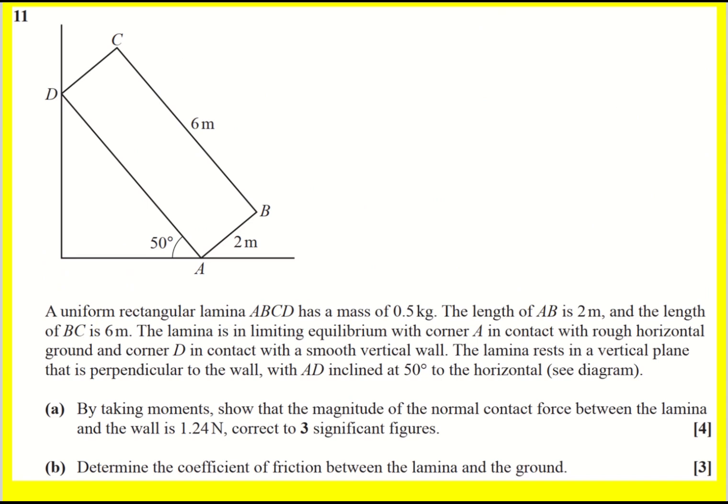So that's just a little intro into this question, because it's a very similar setup. We've got a rectangular lamina, it has a mass of 0.5 kilograms, so that means I've got a weight acting here, 0.5g, and I'm going to put the angle there as 50. The length AB is 2, and BC is 6, that's labelled on there.